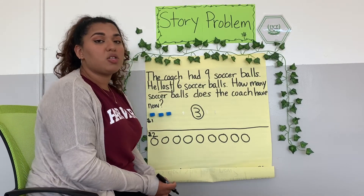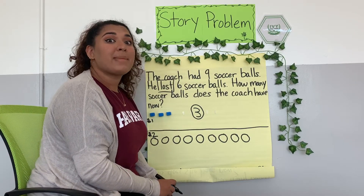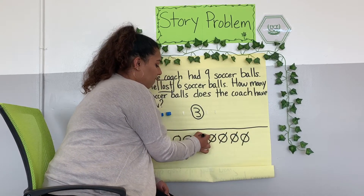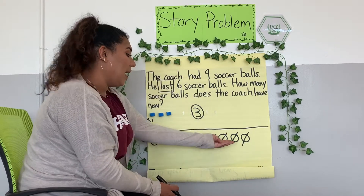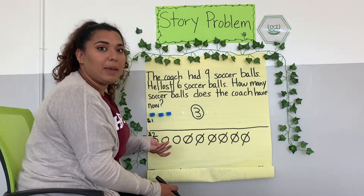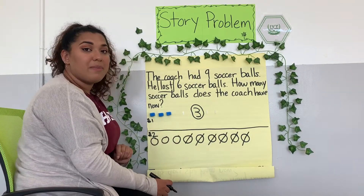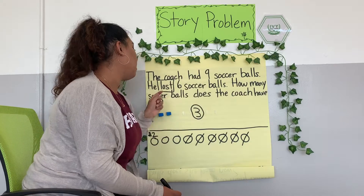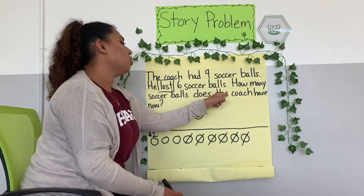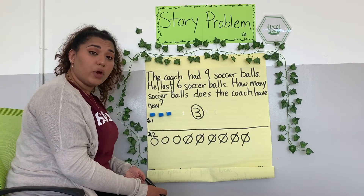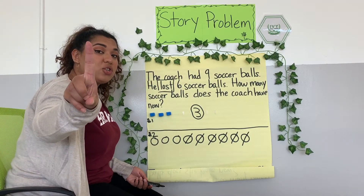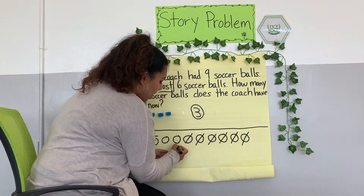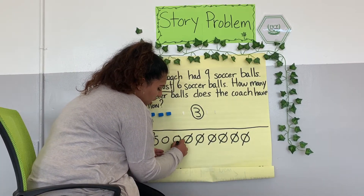So if six soccer balls are lost, how many circles am I crossing out? Six. Let's go ahead and count six. One, two, three, four, five, six. Notice how I drew a line across the circles and made sure I didn't make my paper a mess — it's still super neat and I can still see my other work. So now I need to find how many soccer balls does the coach have now. We need to count what's left over. We're going to tap and circle one time and count. One, two, three. I'm going to go ahead and find the space to write my answer and circle it.